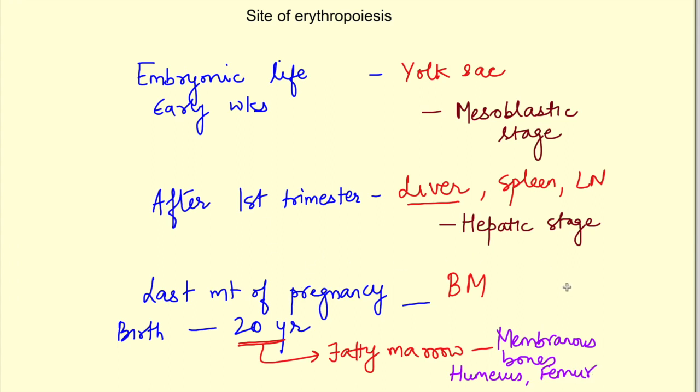After 20 years of age RBCs are synthesized only in the marrow of membranous bones and in the upper ends of humerus and femur. These membranous bones are bones in central axis of your body: skull, sternum, ribs, vertebrae and pelvis.